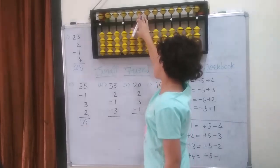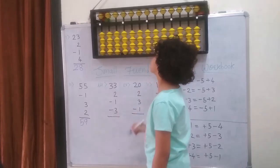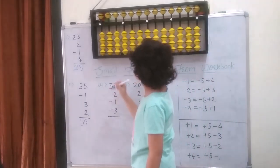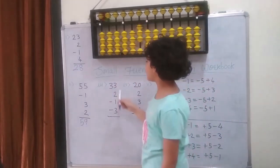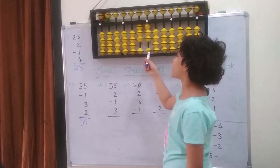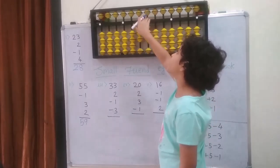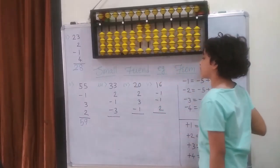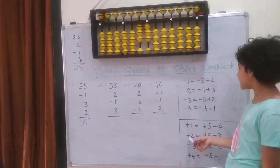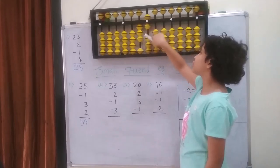Next question: 33 plus 2 minus 1 minus 3. So first on the abacus I am going to put 33. So 3 in the tens place: 1, 2, 3. And 3 in the ones place: 1, 2, 3. Then I am going to add 2. I cannot because I have only 1 bead left. So I have to see if the upper bead is available. This time it is available. I am going to use the small friend formula. This is addition. Which is plus 2 equals to plus 5 minus 3. So plus 5 and minus 3: 1, 2, 3.